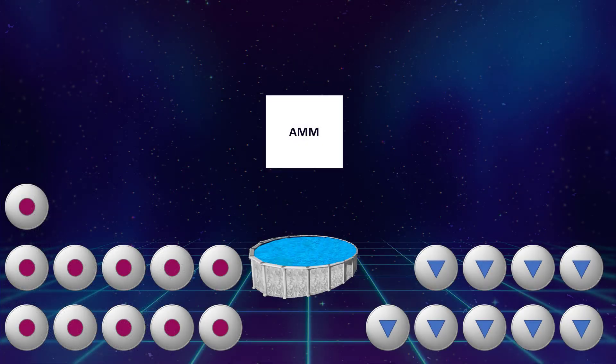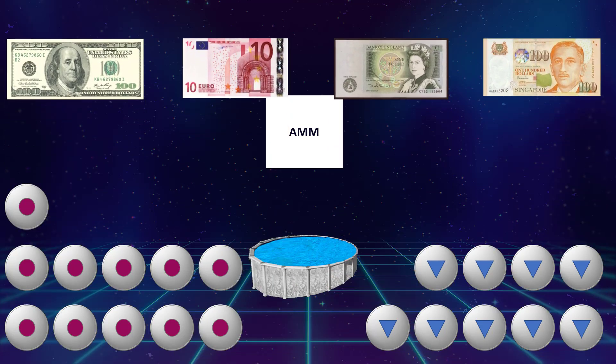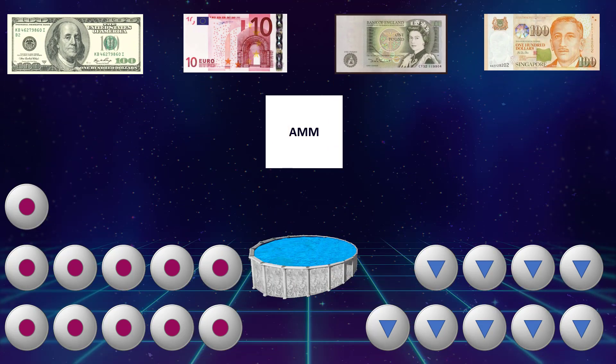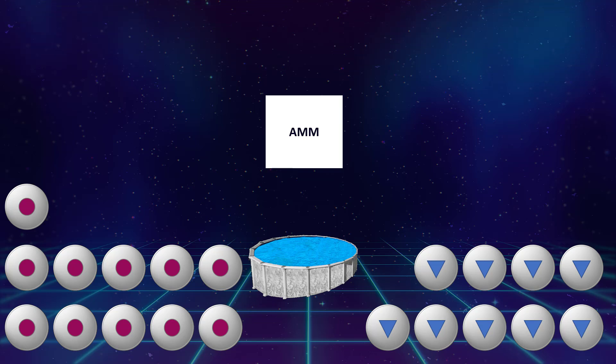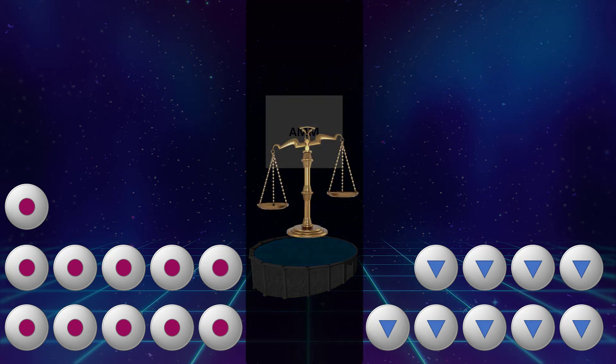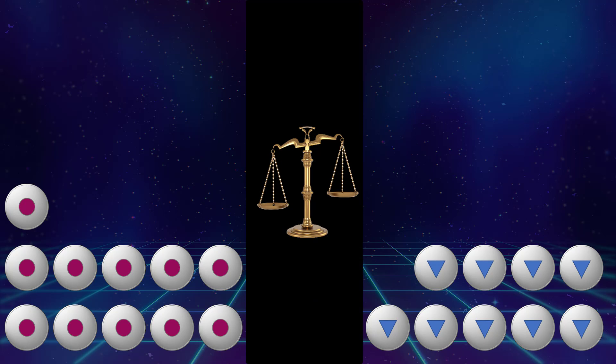How does the automated market maker set prices? It doesn't, at least not directly. It doesn't care about US dollars, euro, British pounds, or Singapore dollars. It cares about balance in the pool. And the AMM uses this balance to set quote unquote price, which is actually the ratio of how much of one token, circle, is needed by an end user to trade for another, triangle, or vice versa.